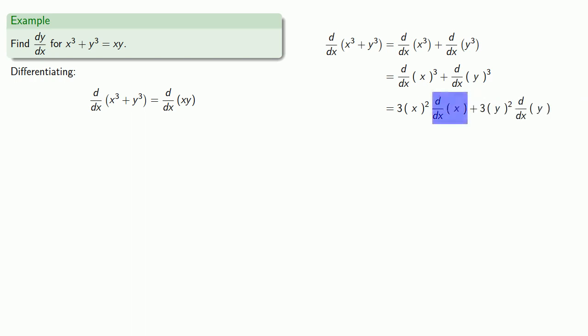Now, we have the derivative with respect to x of x, and the derivative with respect to x of y. dx over dx is just 1, and dy over dx is dy over dx. And so, this gives us our left-hand side.